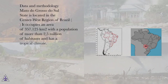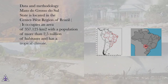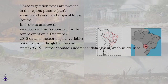Mato Grosso do Sul State is located in the center-west region of Brazil. It occupies an area of 357,125 square kilometers with a population of more than 2.5 million inhabitants and has a tropical climate. Three vegetation types are present in the region: pasture, swampland to the west, and tropical forest to the south.